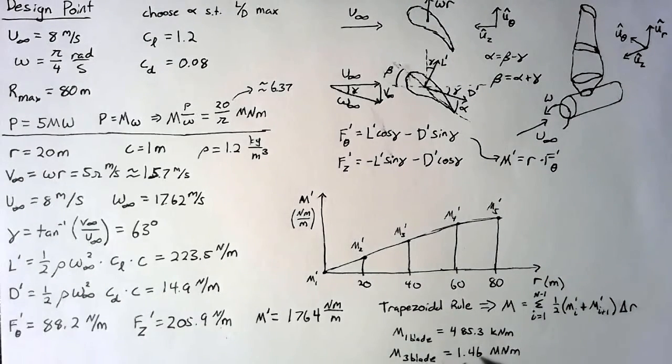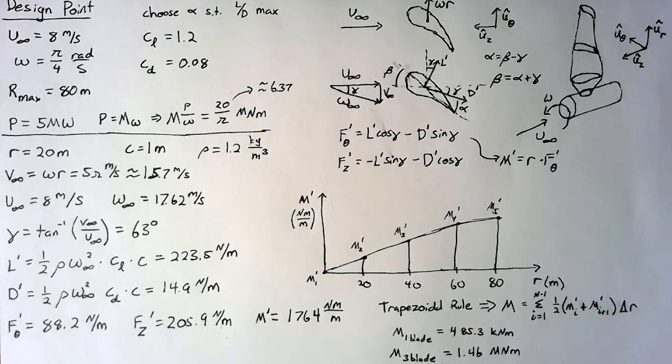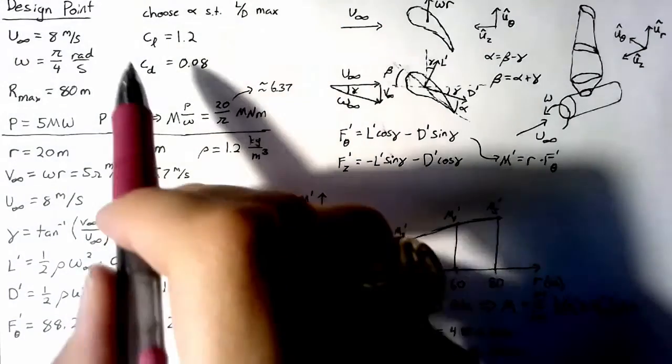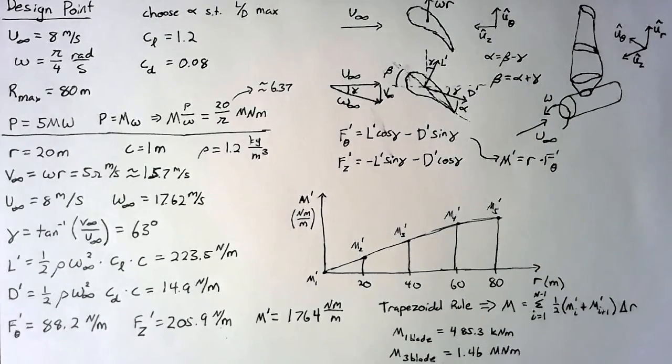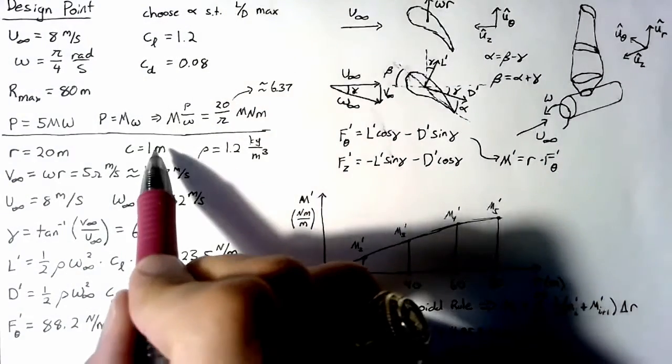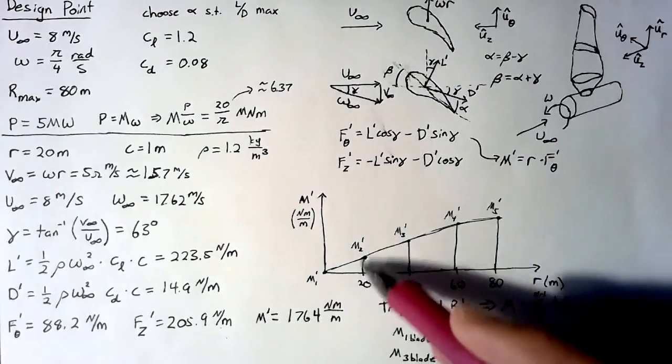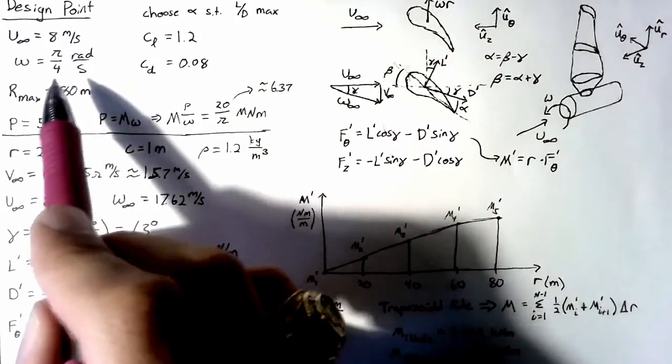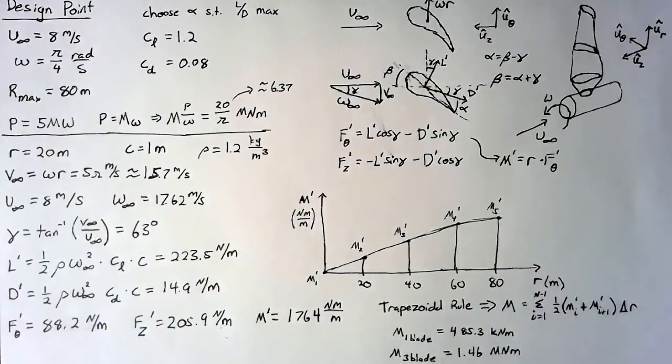So based on our current analysis, we're off by about a factor of 4. In order to make this work, we're going to have to choose some different design points. So this could be a different CL that we're choosing, which would be either a different airfoil or a different angle of attack. We could change our chord length along the airfoil, maybe increasing some of these at the beginning. We could increase our omega, which would decrease our required moment. Or maybe we have to go back and actually change our radius.